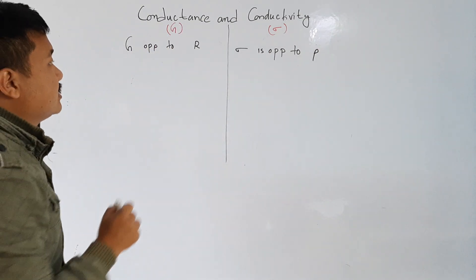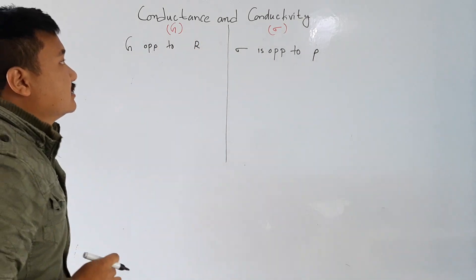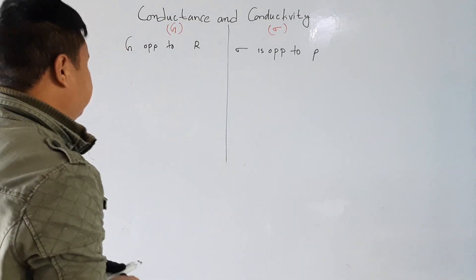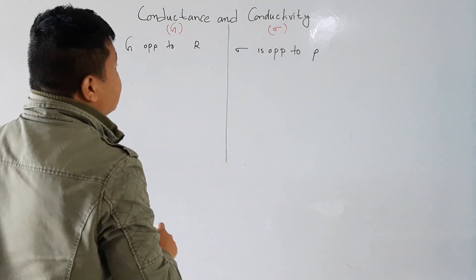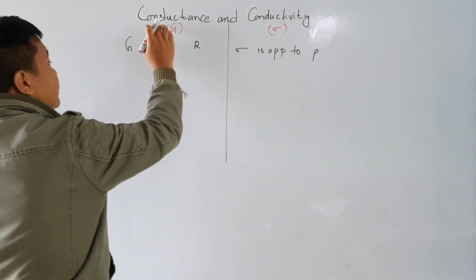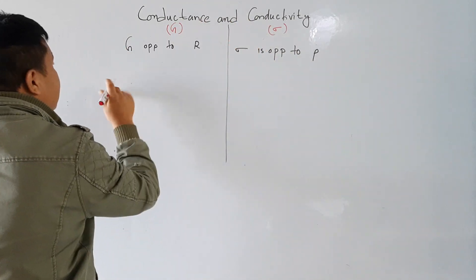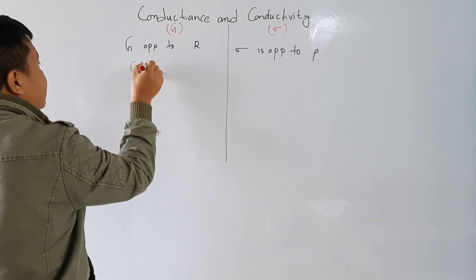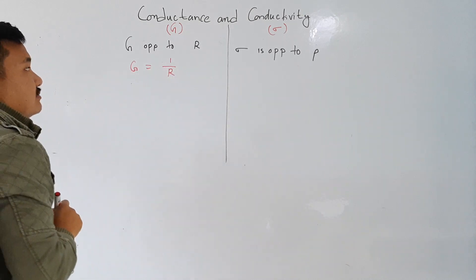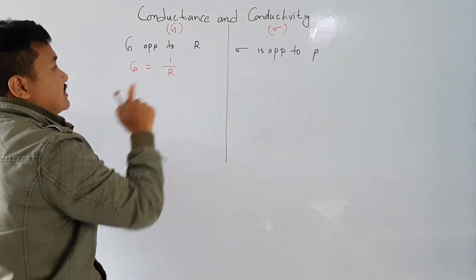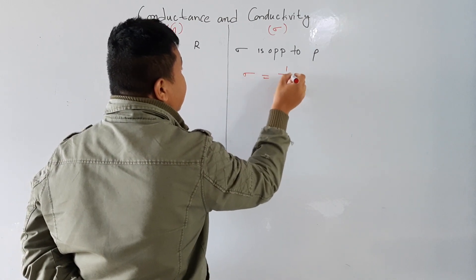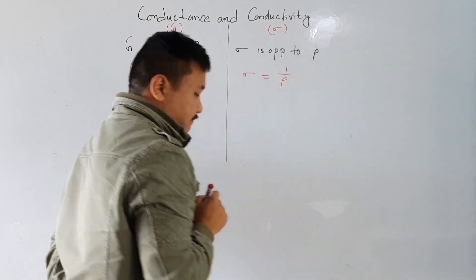The conductance is opposite to resistance, and conductivity sigma is opposite to the resistivity rho. We studied the difference between resistance and resistivity; here also we study conductance and conductivity. This G is equal to 1 by R — this is the relationship between conductance and resistance. Similarly, sigma is equal to 1 divided by rho.